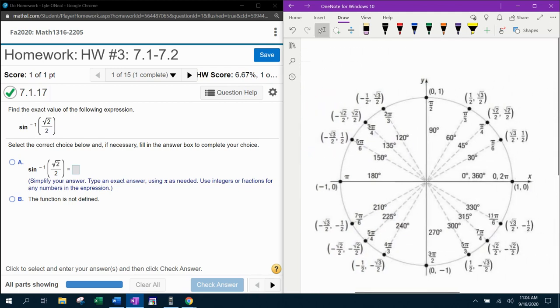Now remember in the unit circle, inverse sine is restricted to the first and fourth quadrant. You have to give back an angle that's from negative pi over 2 to positive pi over 2.